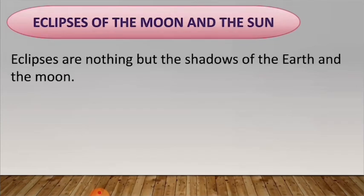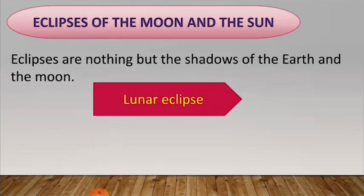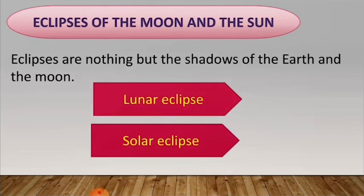Eclipses are nothing but the shadows of the Earth and the moon. Eclipses are of two types: lunar eclipse and solar eclipse.